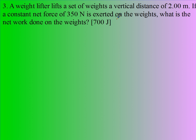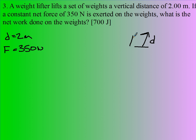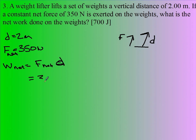A weight lifter lifts a set of weights a vertical distance of 2 meters, so I know my distance is 2 meters. If a constant net force of 350 newtons is exerted on the weights, what is the net work done on the weights? The net work is F-net times D. This is your net force, so we're not worrying about the weight of the weights themselves. So this is 350 newtons times 2.00 meters, and because these are in the same direction, we get positive 700 joules.